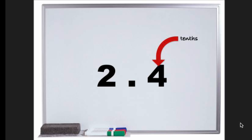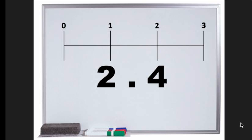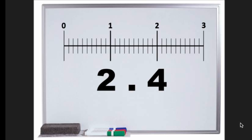Tenths are a part of a whole number. Numbers after the decimal are similar to a fraction. They represent part of a number. 2.4 is in between 2 and 3.